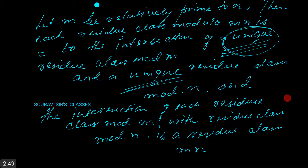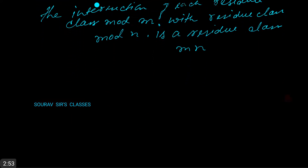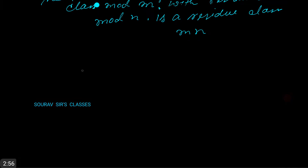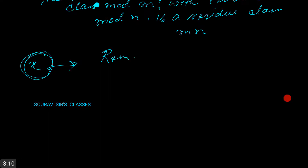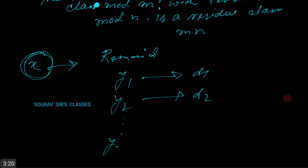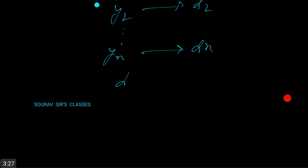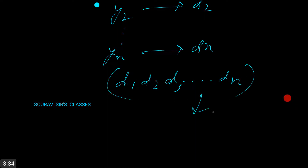Setting aside the technical jargon, what does this mean? This means that if you want to find the least number X which leaves the remainder Y1 when divided by D1, Y2 when divided by D2, and continuing, Yn when divided by Dn — such that D1, D2, ... Dn are all relatively prime to each other.